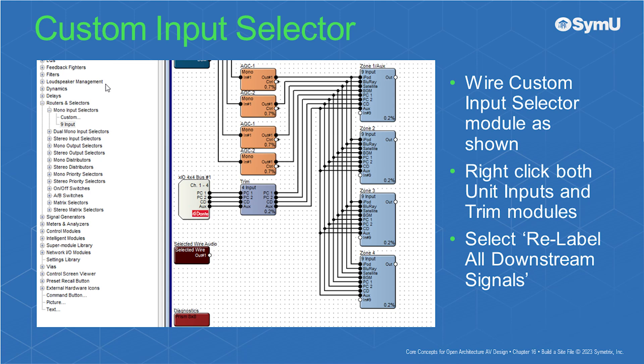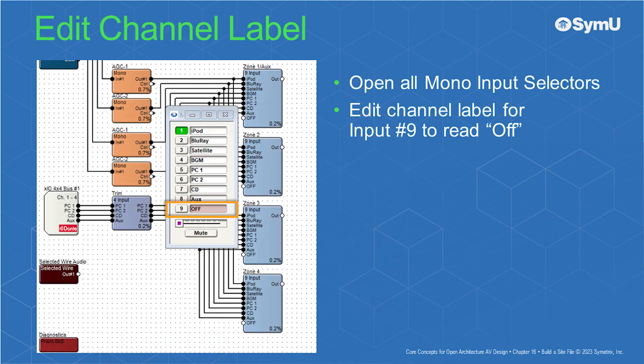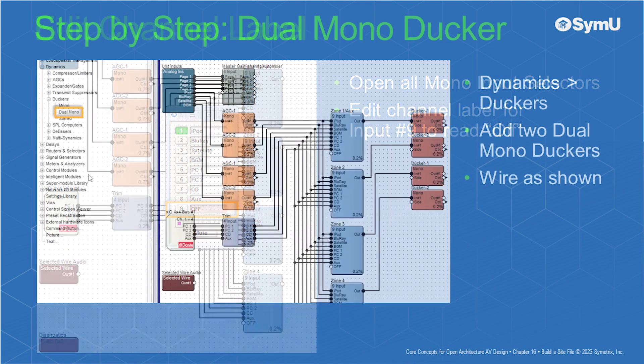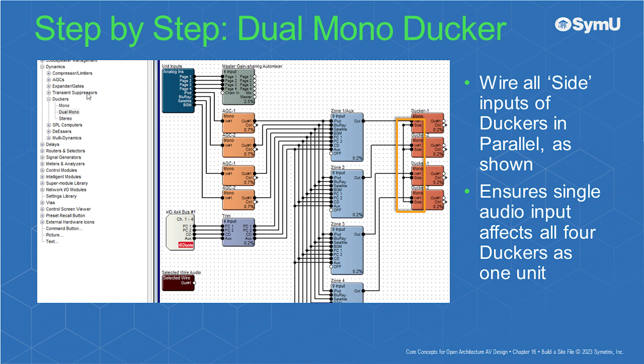Wire the custom input selector module as shown. Right-click on both the unit inputs and trim modules and select re-label all downstream signals. Under routers and selectors, mono input selectors, add four custom input selectors with nine inputs. Open all mono input selectors and edit the channel labels for input nine to read 'off.' Under dynamics, duckers, add two dual mono duckers and wire them as shown. Next, wire all side inputs of the duckers in parallel, as shown.